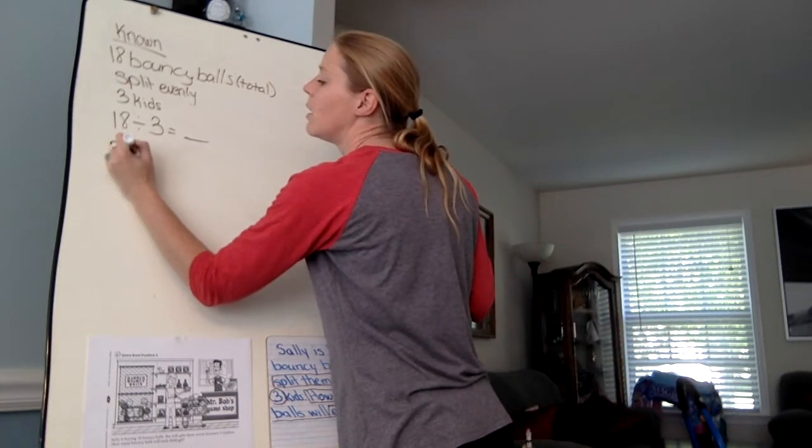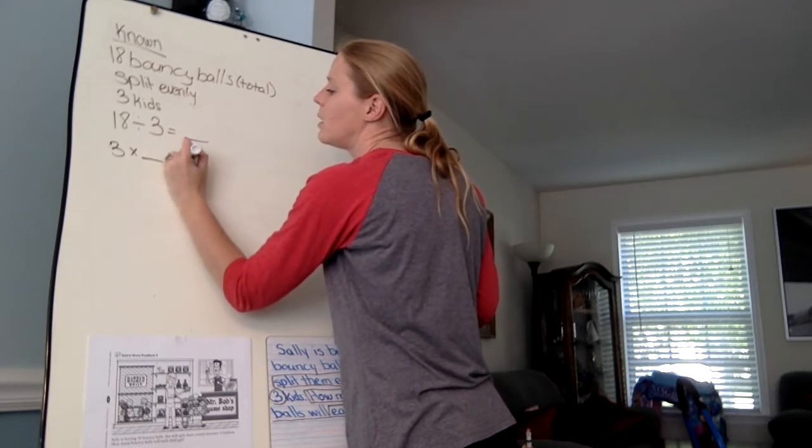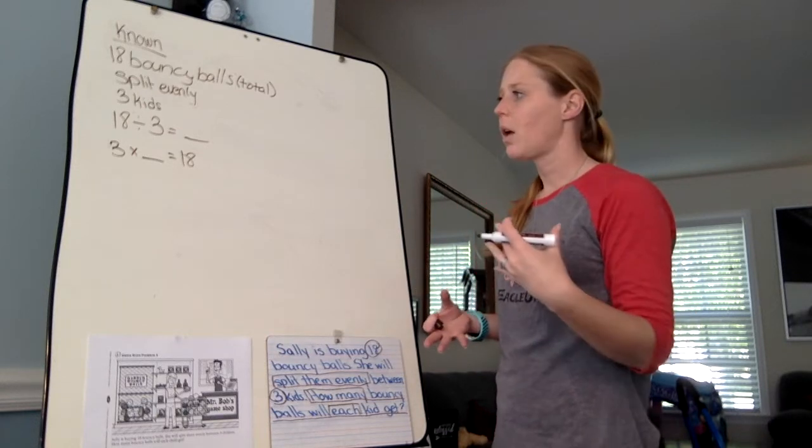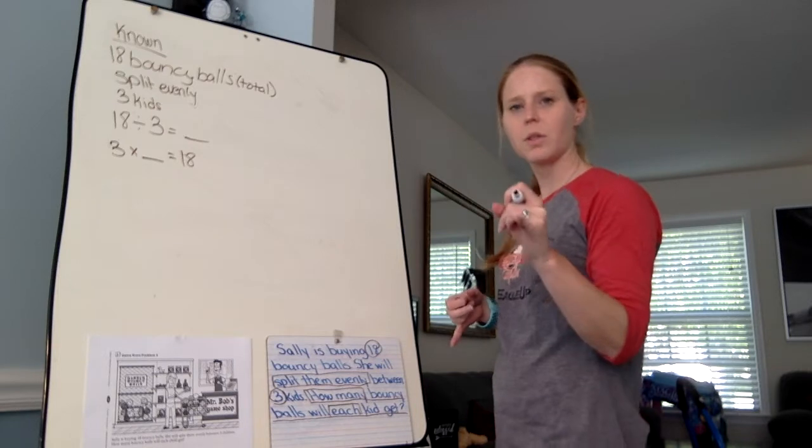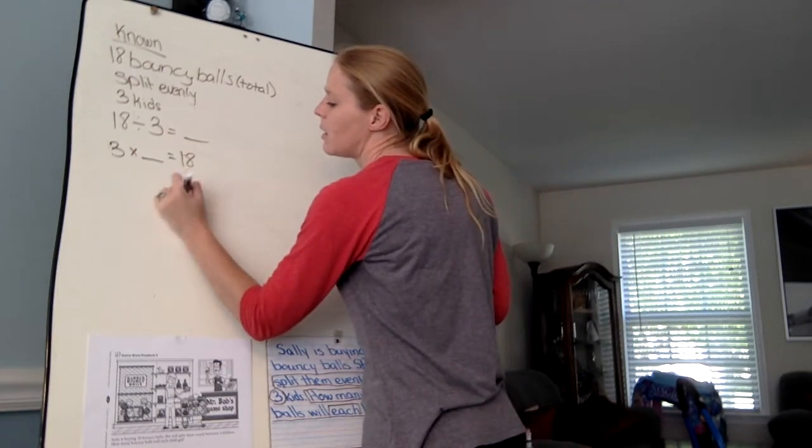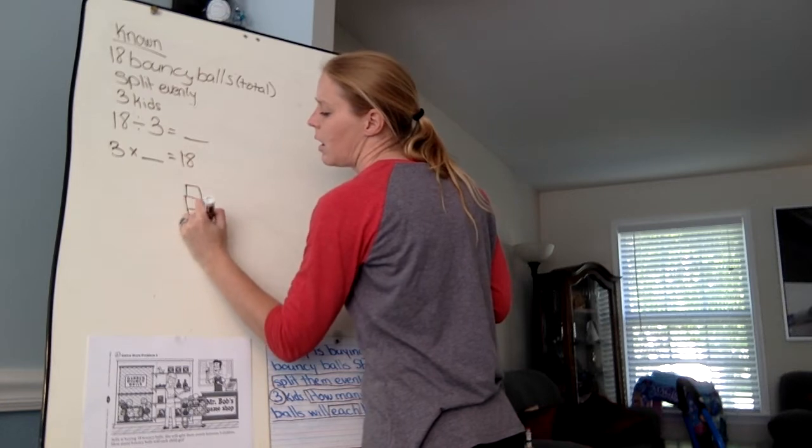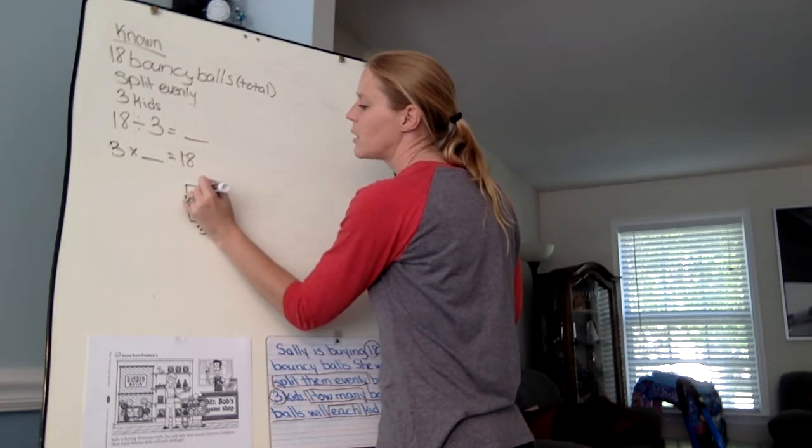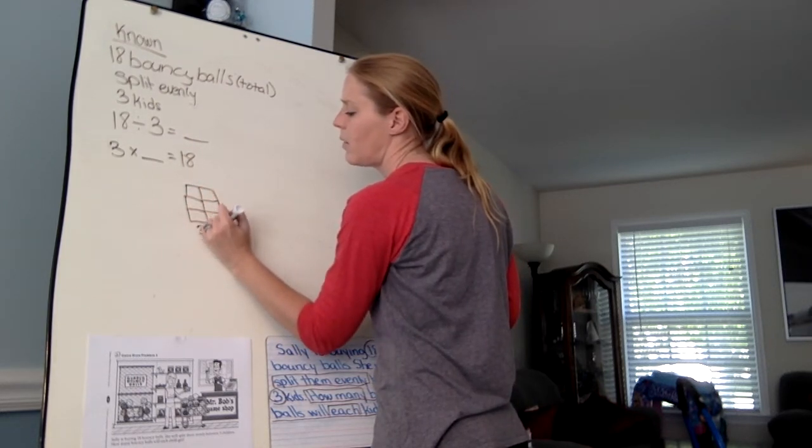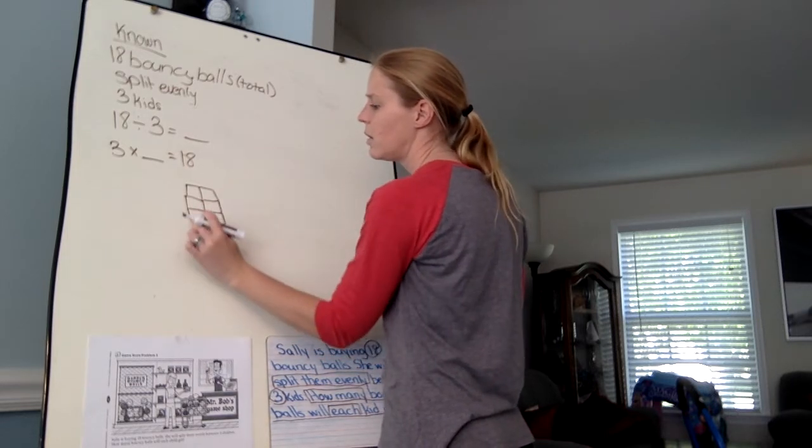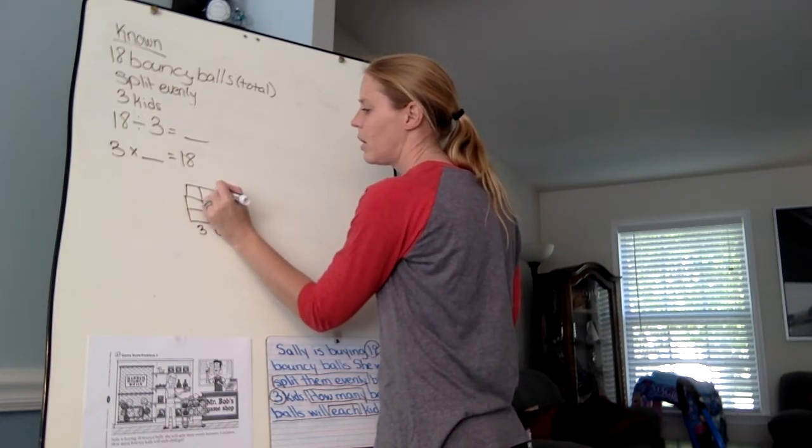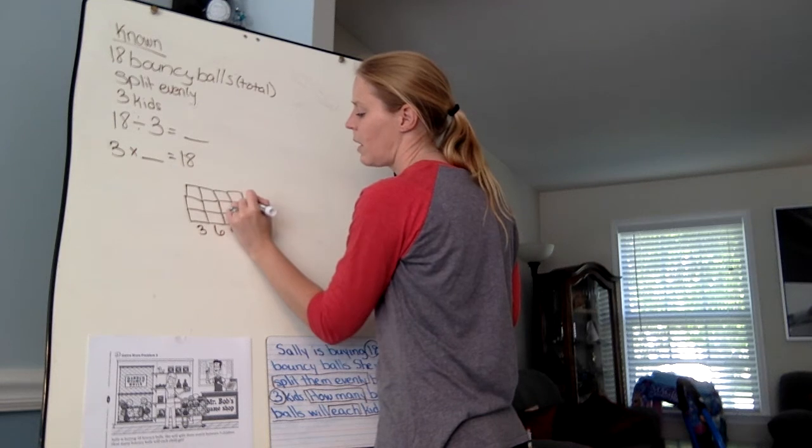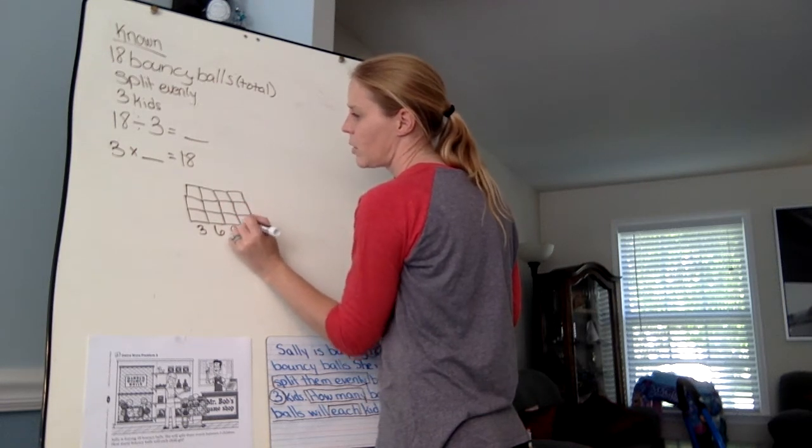So now I just have to figure out how we feel like solving this one. I think I'm going to do an array. We've gotten really good at those this week. So here's my three kids. And I know I have to get to 18 bouncy balls, so there's three. And then I'm just going to start building that array based off of the kids. So there's three, six, three more, nine.